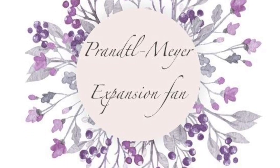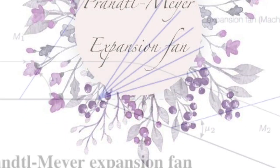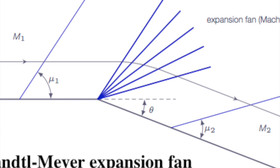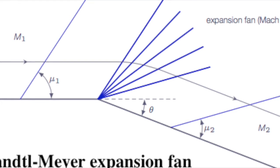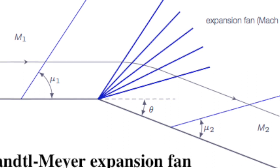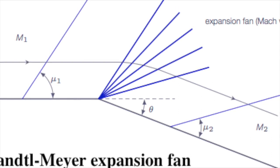Prandtl-Meyer expansion waves: When a supersonic flow is turned away from itself, an expansion wave is formed. Expansion waves are the antithesis of shock waves.